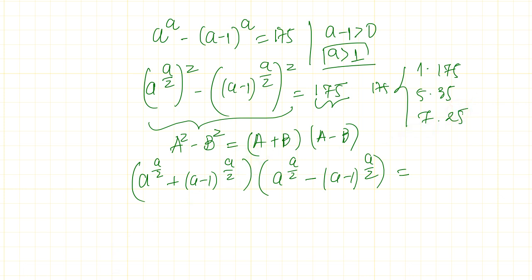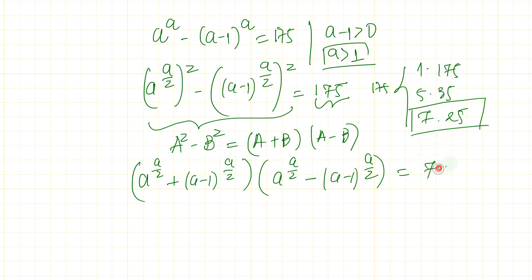...5 times 35, and then 7 times 25. For the purpose of our problem, we want to find the integer solution, so the value of a has to be an integer. For this case, what's going to work for us is 7 times 25.